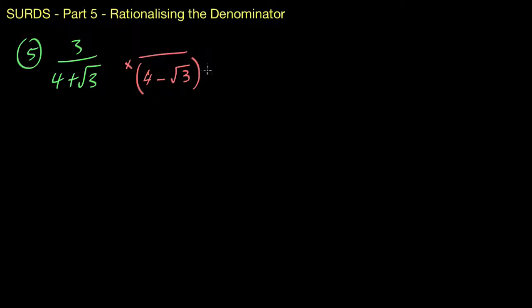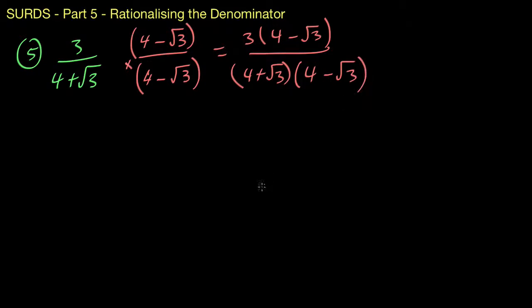Now, we have to multiply this by 1. So the only way to make this 1 is to make the top and the bottom exactly the same. So you can see here, I've got 4 minus root 3 over 4 minus root 3. I'm simply multiplying this by the number 1. But what we're going to do is keep this as it is. We've got 3 outside of 4 minus root 3 now, that's multiplying onto that. And on the base, we've got 4 plus root 3 and 4 minus root 3 multiplying together.